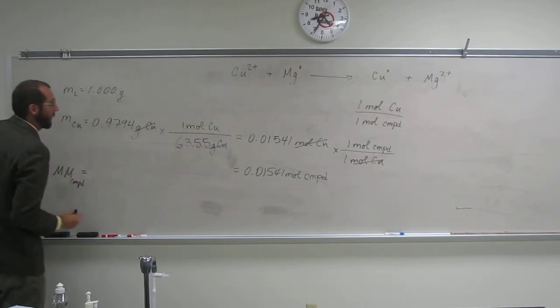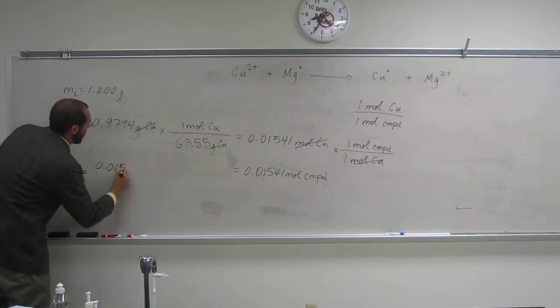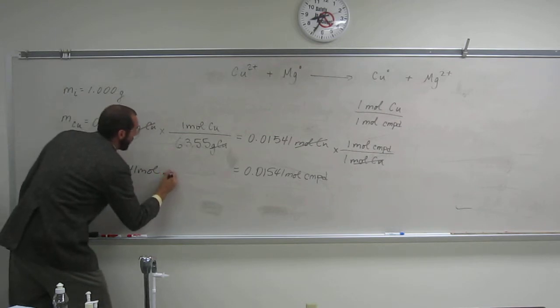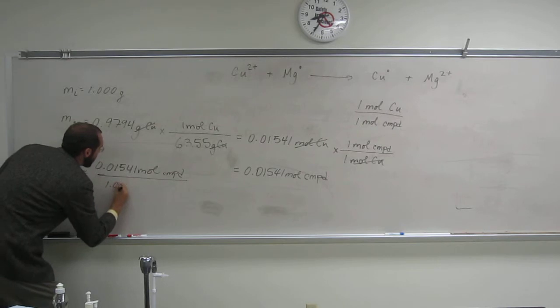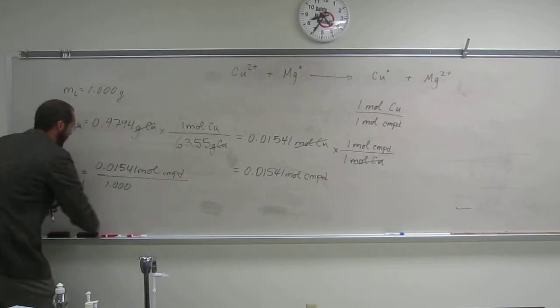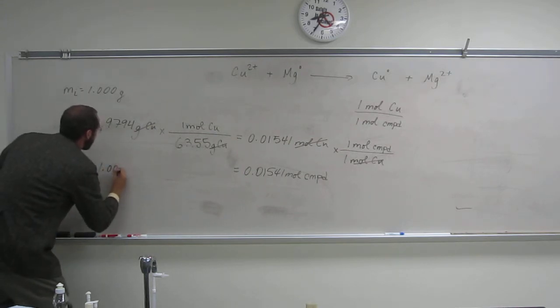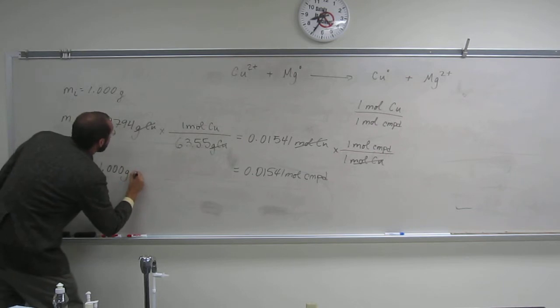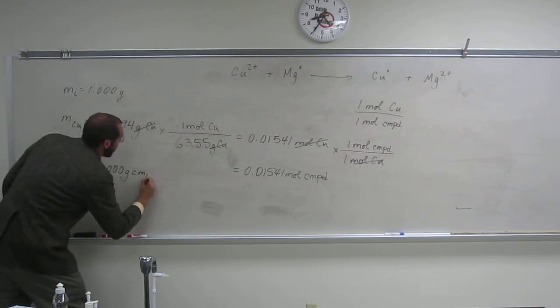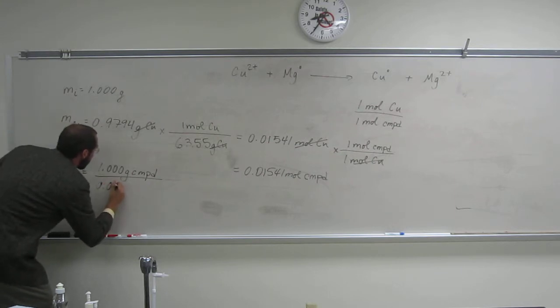Of the compound, we've got to figure out the molar mass first. So 0.01541 moles of the compound divided by 1.000, 1.000 grams of the compound per 0.01541 moles of the compound.